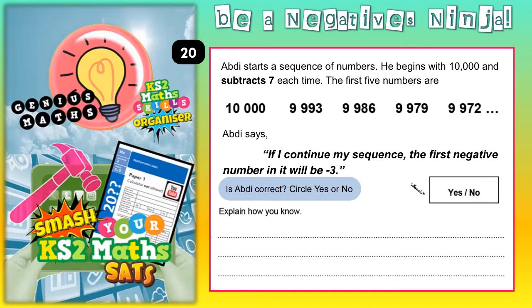Question 20. Abdi starts a sequence of numbers. He begins with 10,000 and subtracts 7 each time. The first 5 numbers are 10,000, 9,993, 9,986, 9,979 and 9,972.